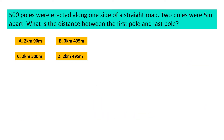500 poles were erected along one side of a straight road. Two consecutive poles were 5 meter apart. What is the distance between the first pole and the last pole? Option A: 2 kilometer 90 meter, Option B: 3 kilometer 495 meter, Option C: 2 kilometer 500 meter, and Option D: 2 kilometer 495 meter.